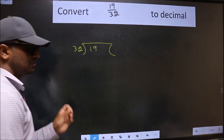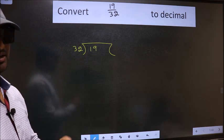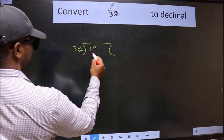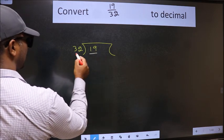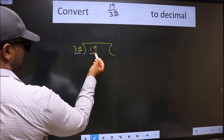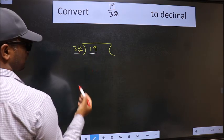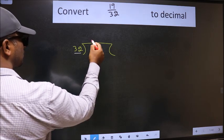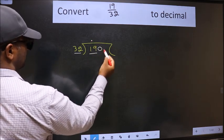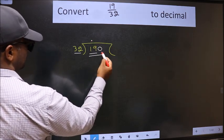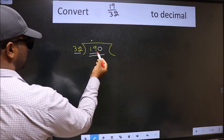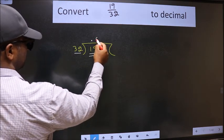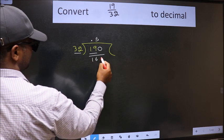This is step 1. Here we have 19 and here 32. 19 is smaller than 32, so what we should do is put a dot and take 0. So 190. A number close to 190 in the 32 table is 32 fives: 160.